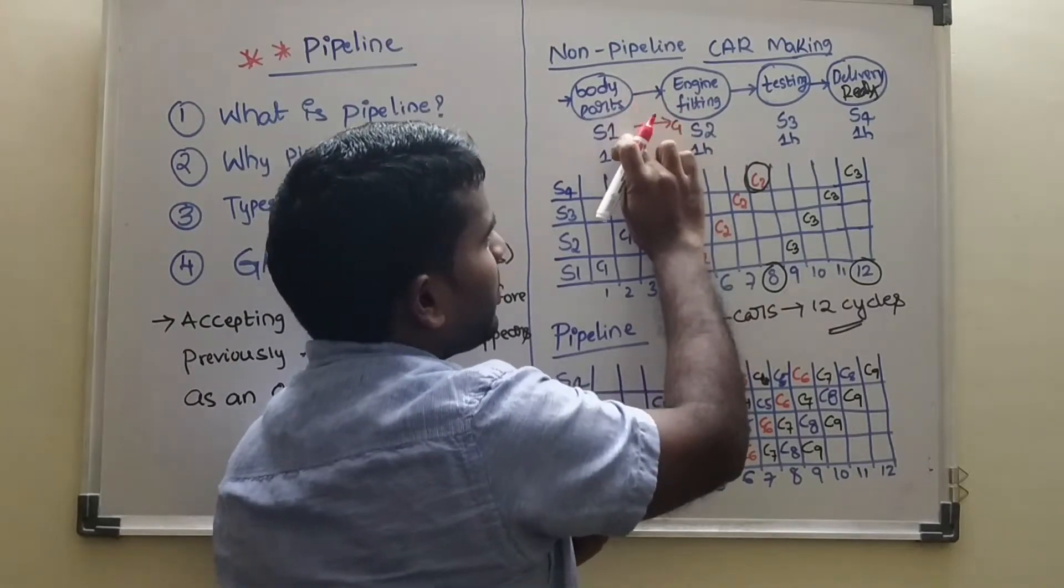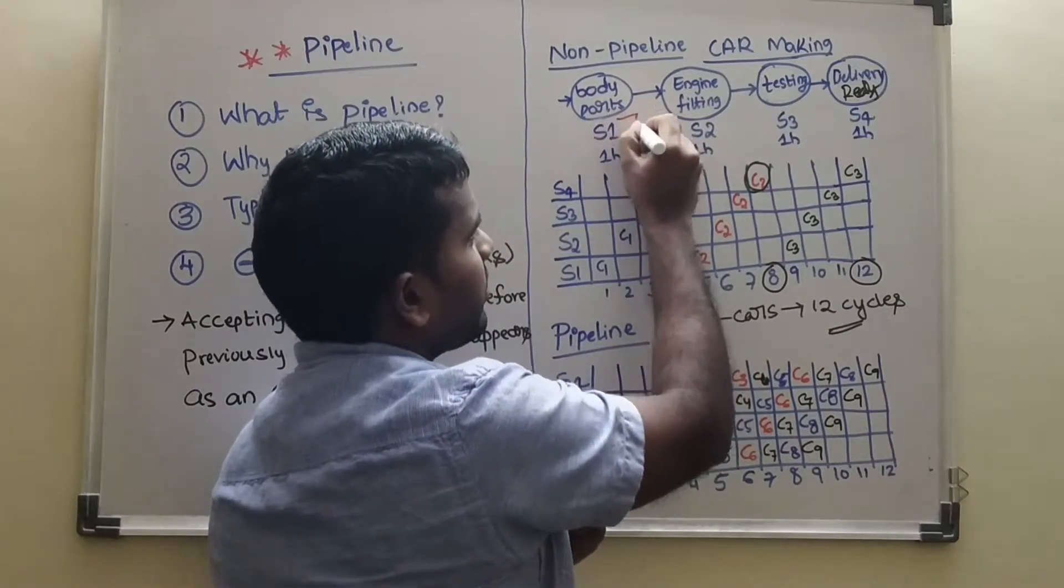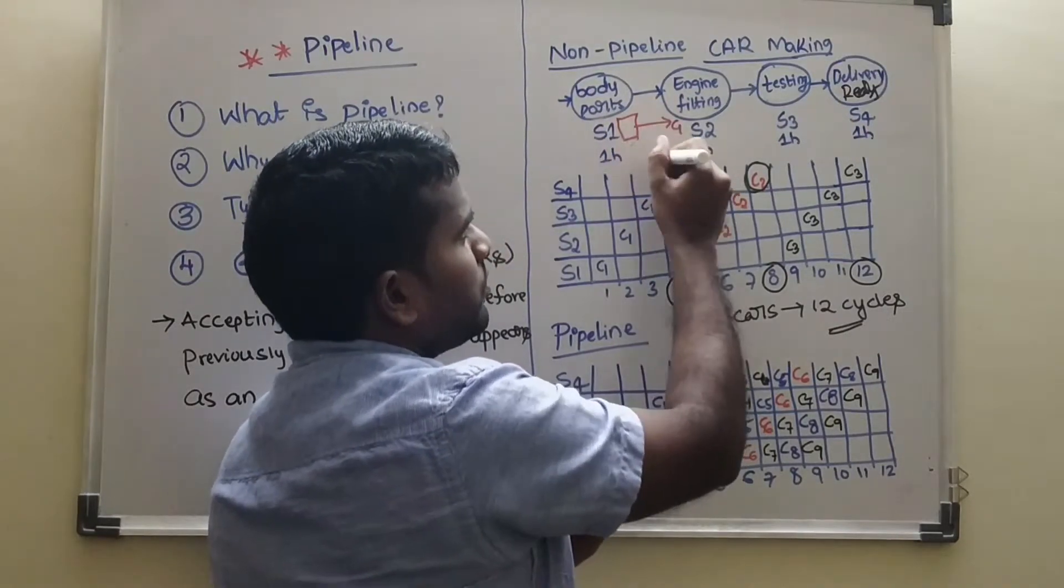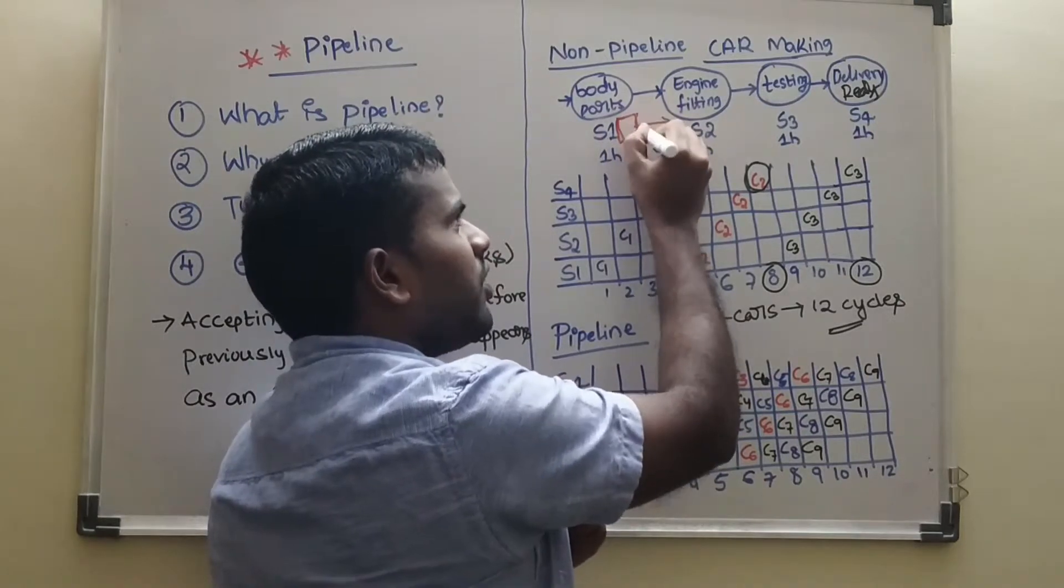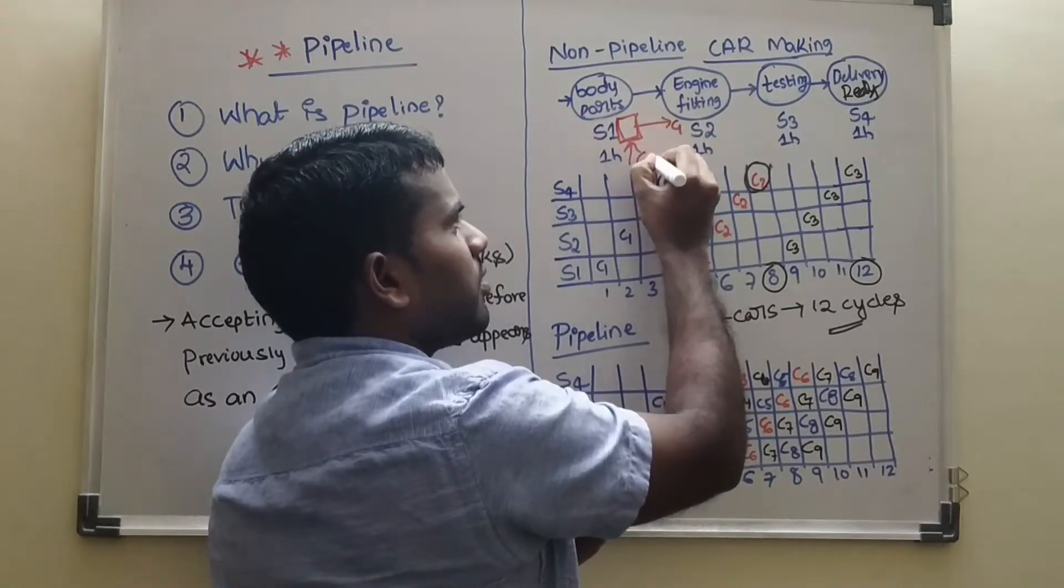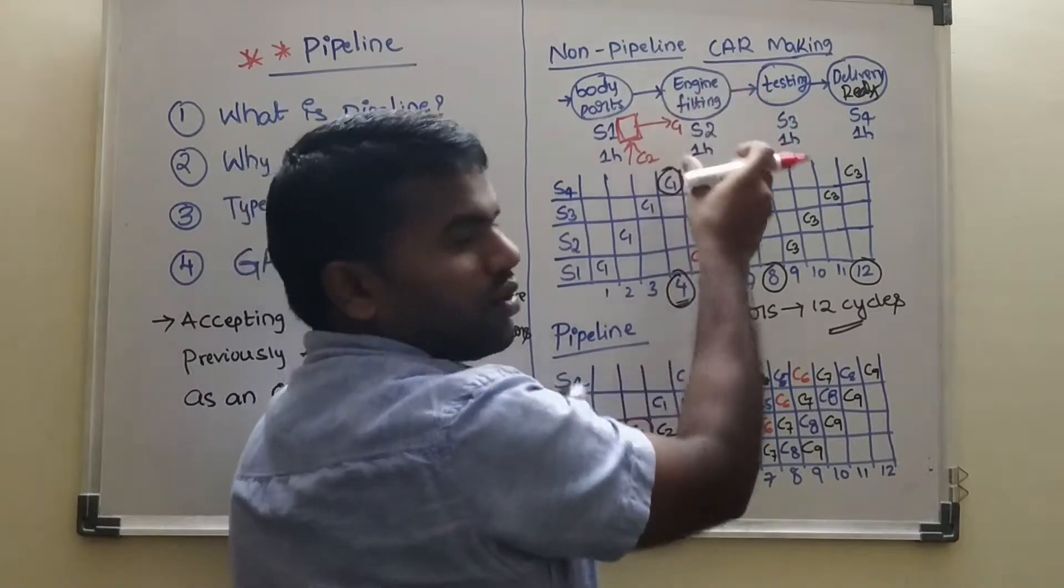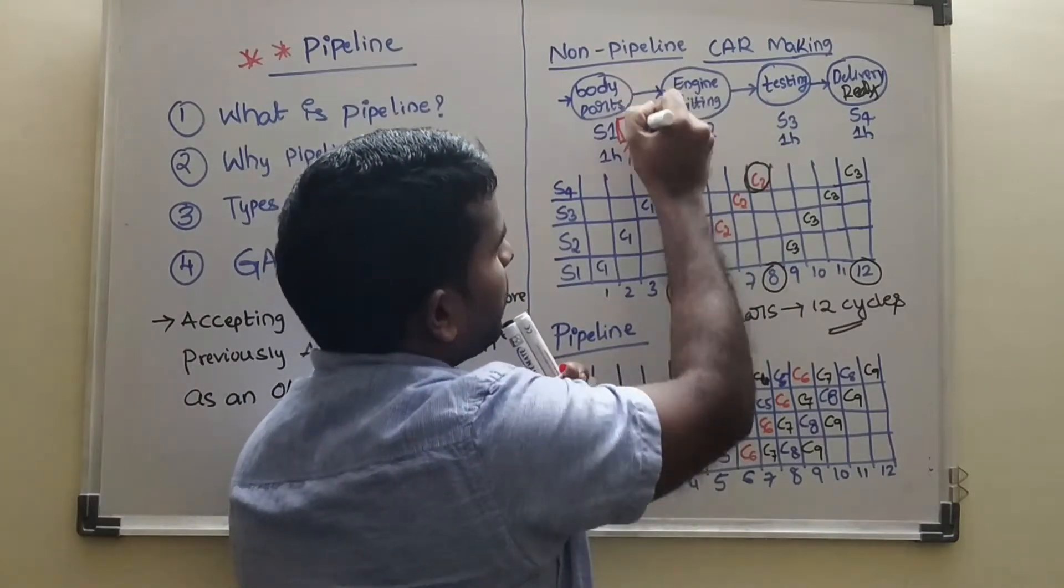Then this is empty place. There is nothing here. Right? So whenever this is free, empty slot, we can put one car. So those people are here only. They will do other car.